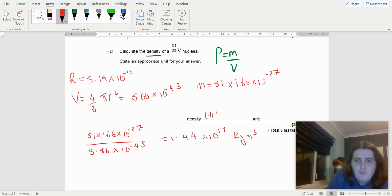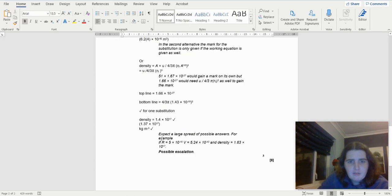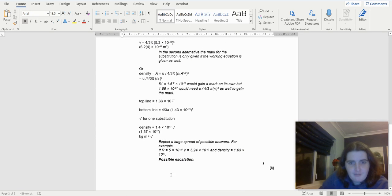So I'm going to put that here, 1.44 × 10¹⁷ kilograms per meter cubed. If you see the unit line, that implies you have to put the unit, and that's worth a mark. And I'll show you here in the mark scheme, all the way down here. So I've got 1.37. Expect a very large spread of possible answers. I did.